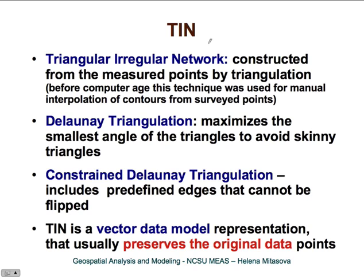TIN requires a little bit more processing. TIN is short for Triangular Irregular Network. This network is constructed from the measured points by triangulation. It is good to remind that before the computer age, these triangles were used for manual interpolation of contours from surveyed points. For automated computation of TINs, Delaunay triangulation is used. This approach maximizes the smallest angle of the triangles to avoid skinny triangles that cause problems when deriving contours.